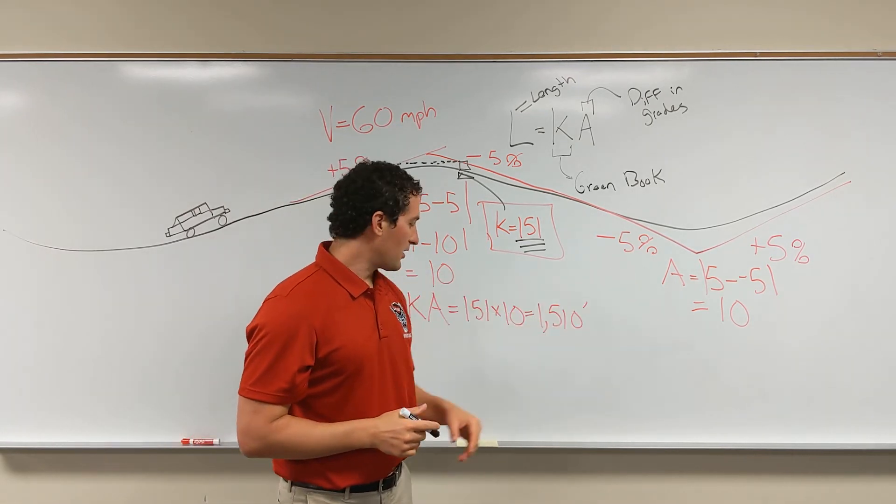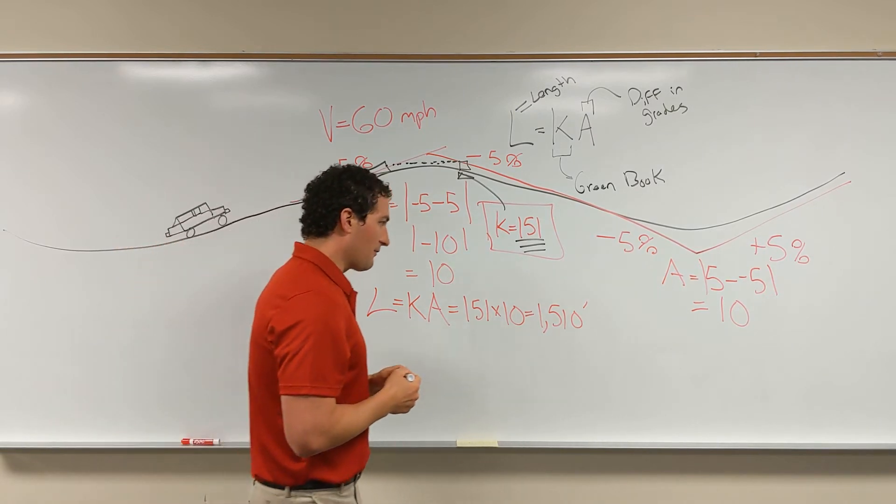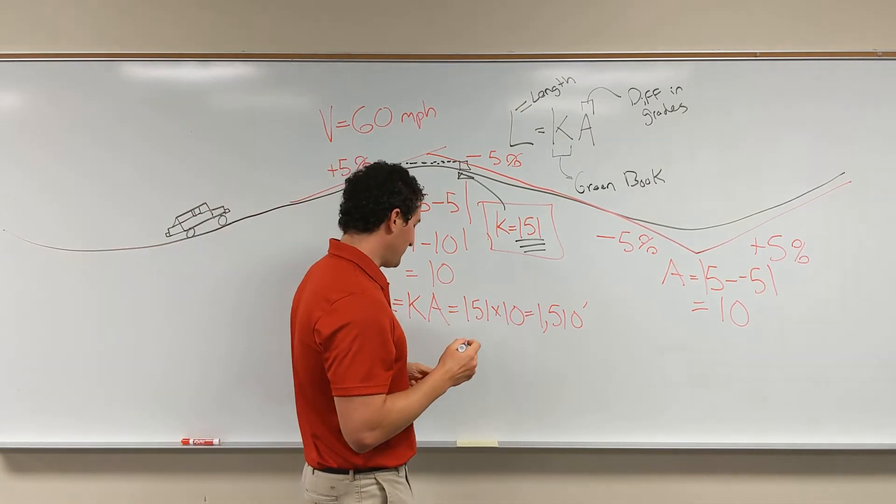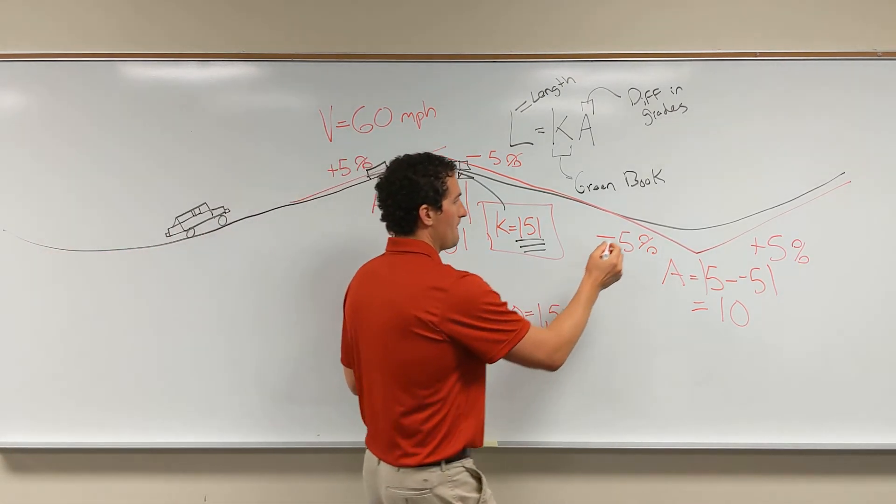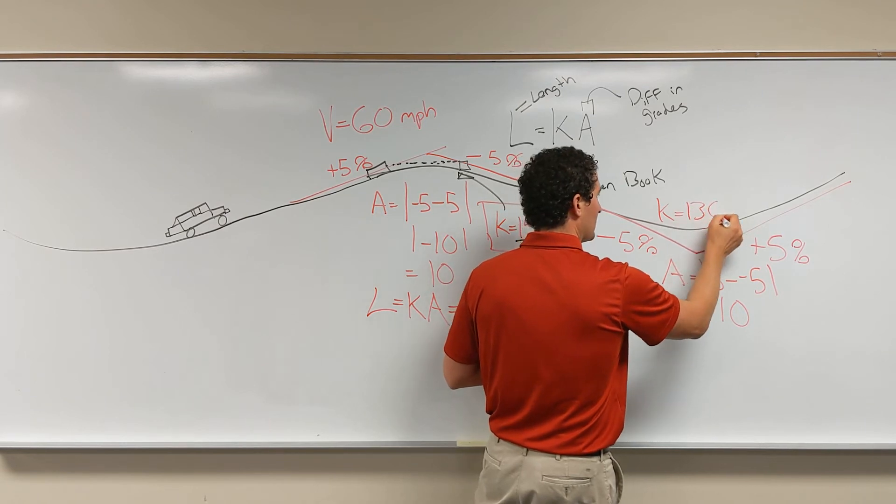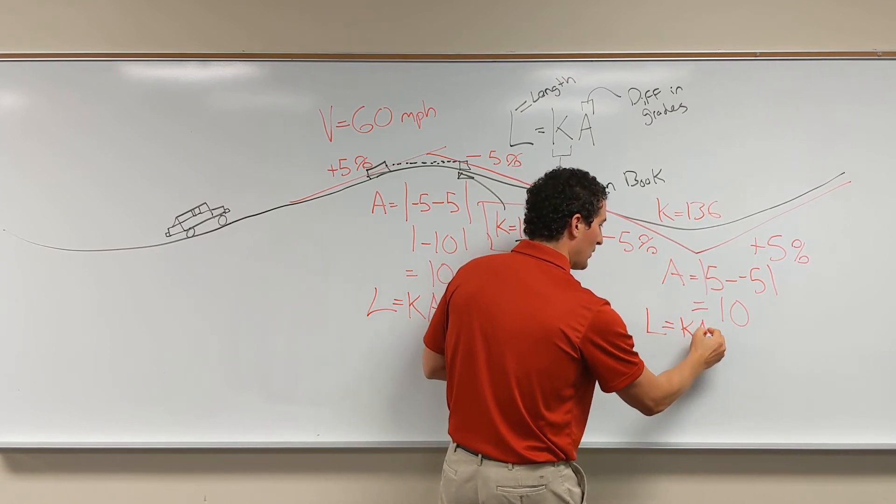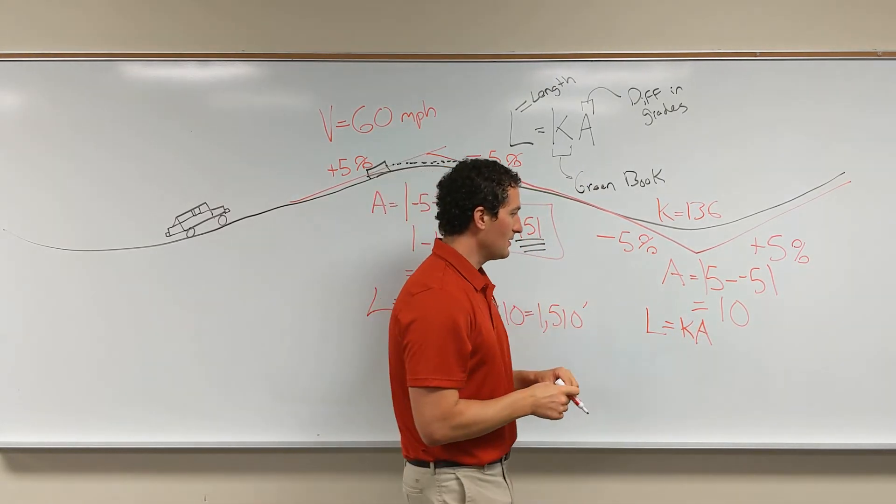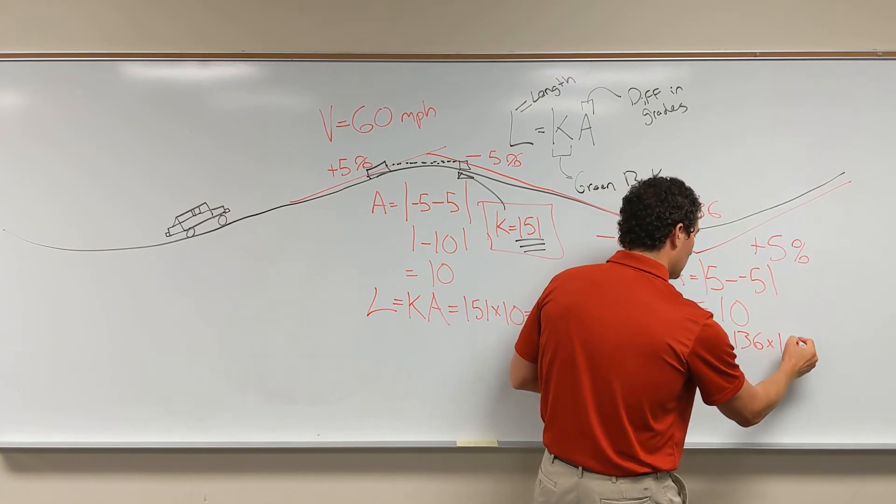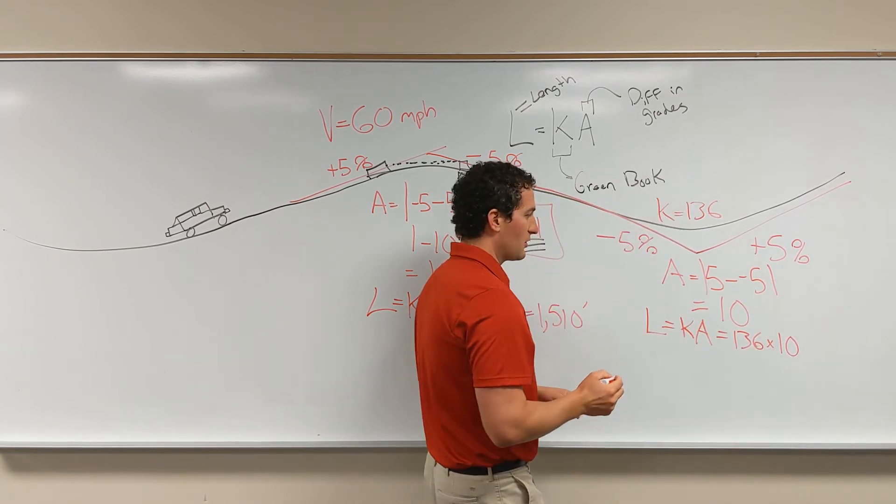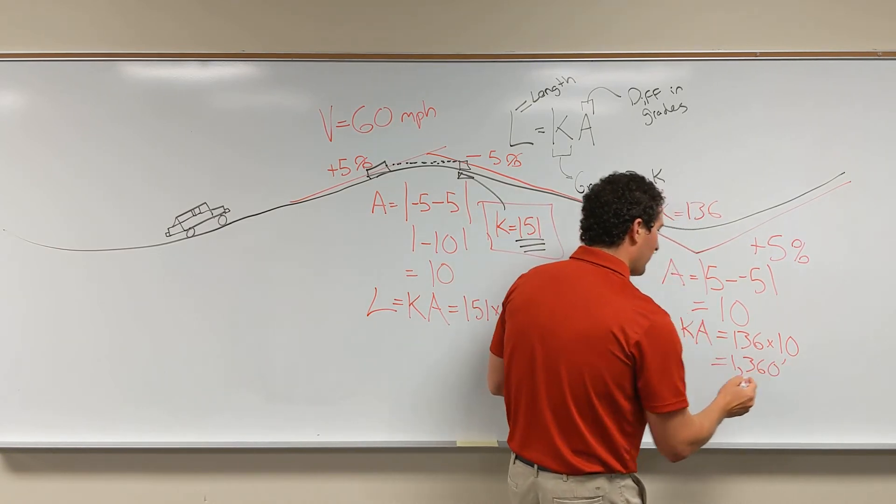Similarly, for the sag curve, we need to know our K value from the green book. And for a 60 mile per hour design speed, we're going to have a K value of 136. So for this curve, we're going to have K of 136. Again, the equation stays the same. Even though we have a sag curve, we still have L equals K times A. But in this case, the K is 136. The A, the algebraic difference in grades, is 10. So we're going to have a minimum length of 1,360.